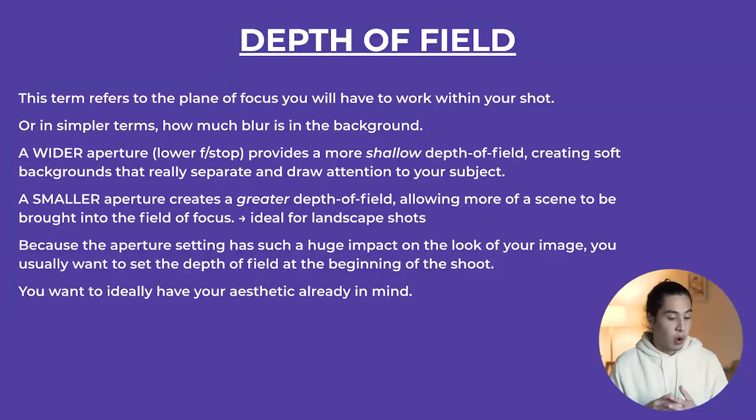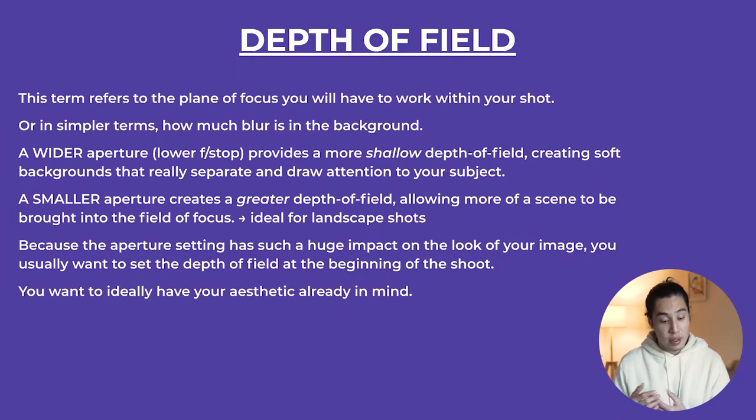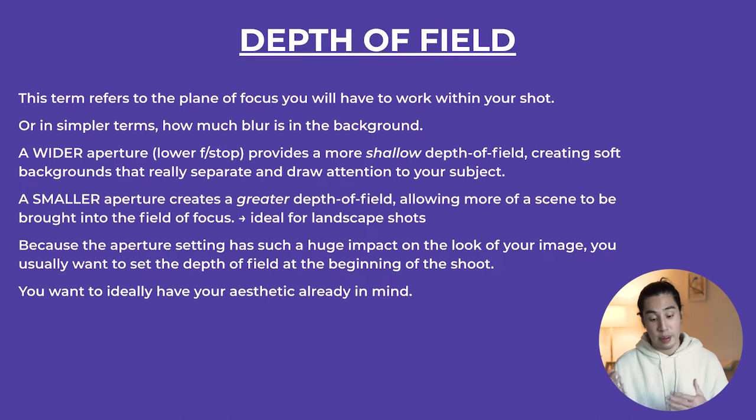So as you can see, the background I have right now is kind of blurry. You can immediately judge that I have an aperture that's quite wide, letting in a lot of light. A wider aperture — a lower f-stop — provides a more shallow depth of field, creating soft backgrounds like what I have right now, that really separate and draw attention to your subject. A smaller aperture creates a greater depth of field, allowing more of a scene to be brought into focus. This is more ideal for landscape shots.